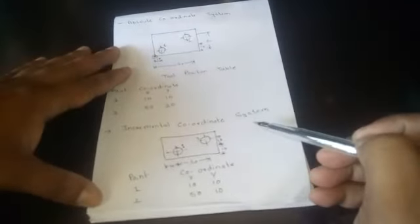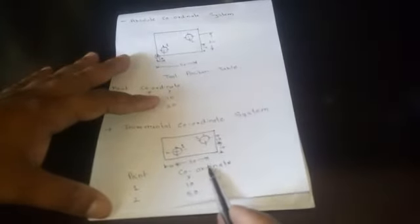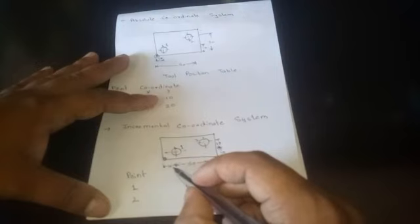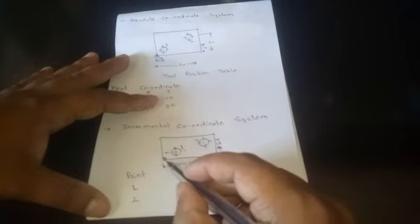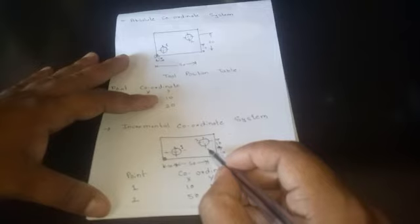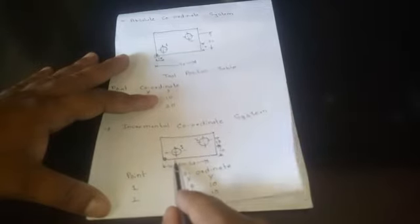Now second is incremental. You can see that the dimensions here are given in a chain form. This is a reference point and we are considering the dimension as first point will be the start point, when this dimension will be the end. Now this end point will act as the start point for the second movement of the tool. So you can see that from here the center is located at 10, so the x coordinate is 10 mm.